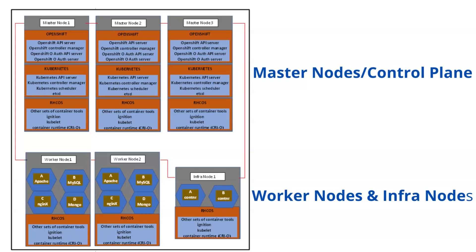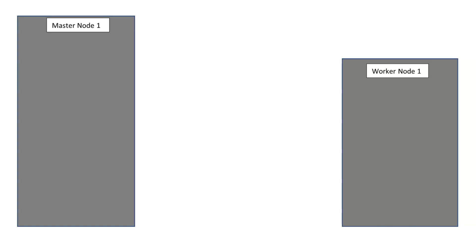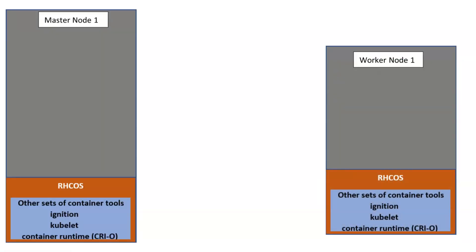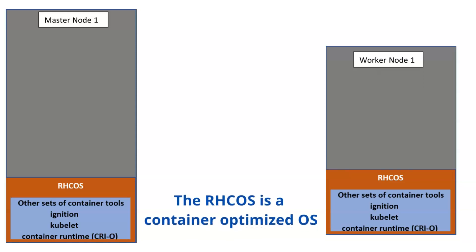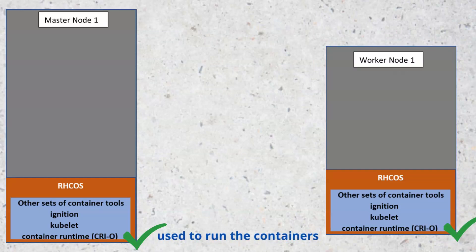Now let's talk about the services that must be present on these nodes. The first thing you must install on every node is the Red Hat Core Operating System, which is RHCOS. RHCOS is a container-optimized OS and it consists of the CRI-O container runtime — this is the Kubernetes-native container runtime which has replaced the Docker container runtime used in other versions of OpenShift. The container runtime is basically used to run the containers in the cluster. RHCOS also consists of the Kubernetes kubelet service, which interfaces with the container runtime and the node.